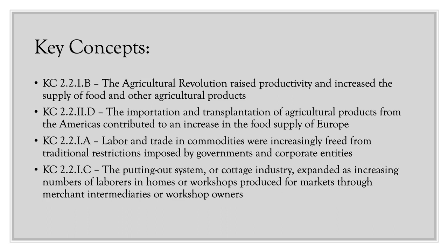First, the Agricultural Revolution raised productivity and increased the supply of food and other agricultural products. Second, the importation and transplantation of agricultural products from the Americas contributed to an increase in the food supply of Europe. Third, labor and trade in commodities were increasingly freed from traditional restrictions imposed by governments and corporate entities. Fourth, the putting-out system or cottage industry expanded as increasing numbers of laborers in homes or workshops produced for markets through merchant intermediaries or workshop owners.